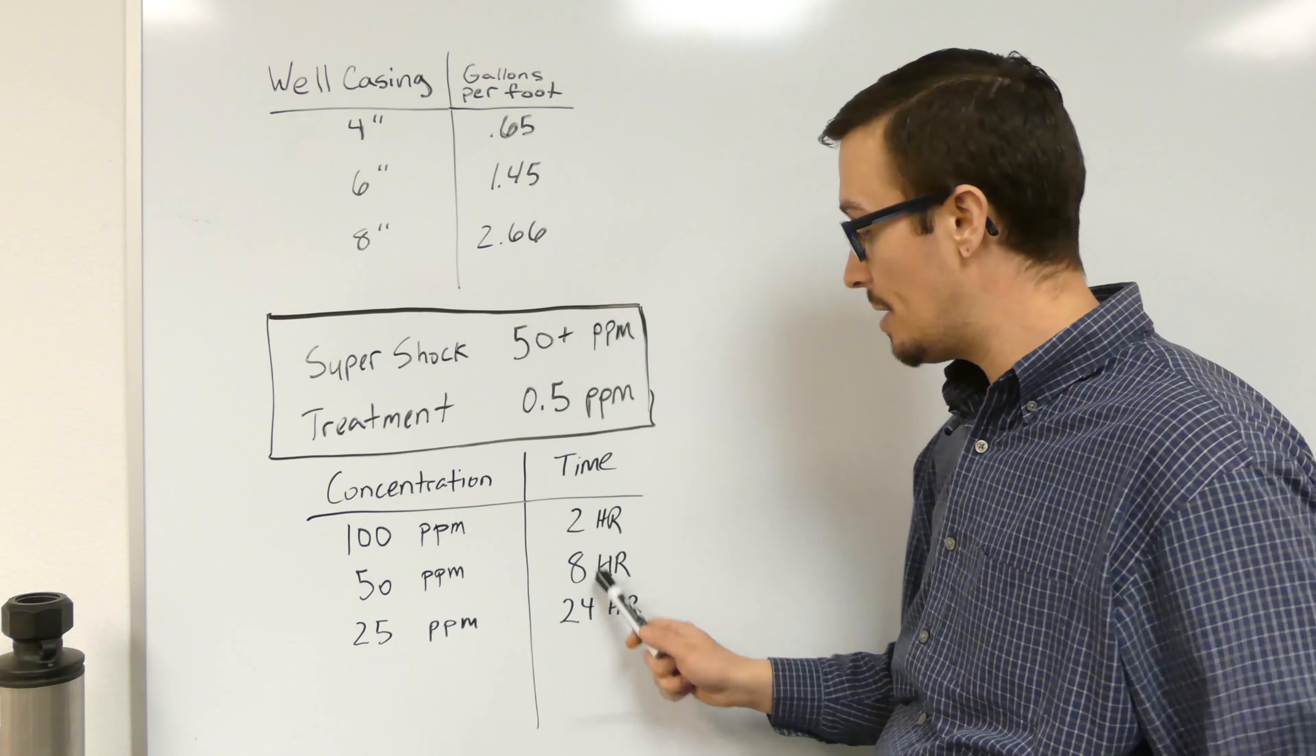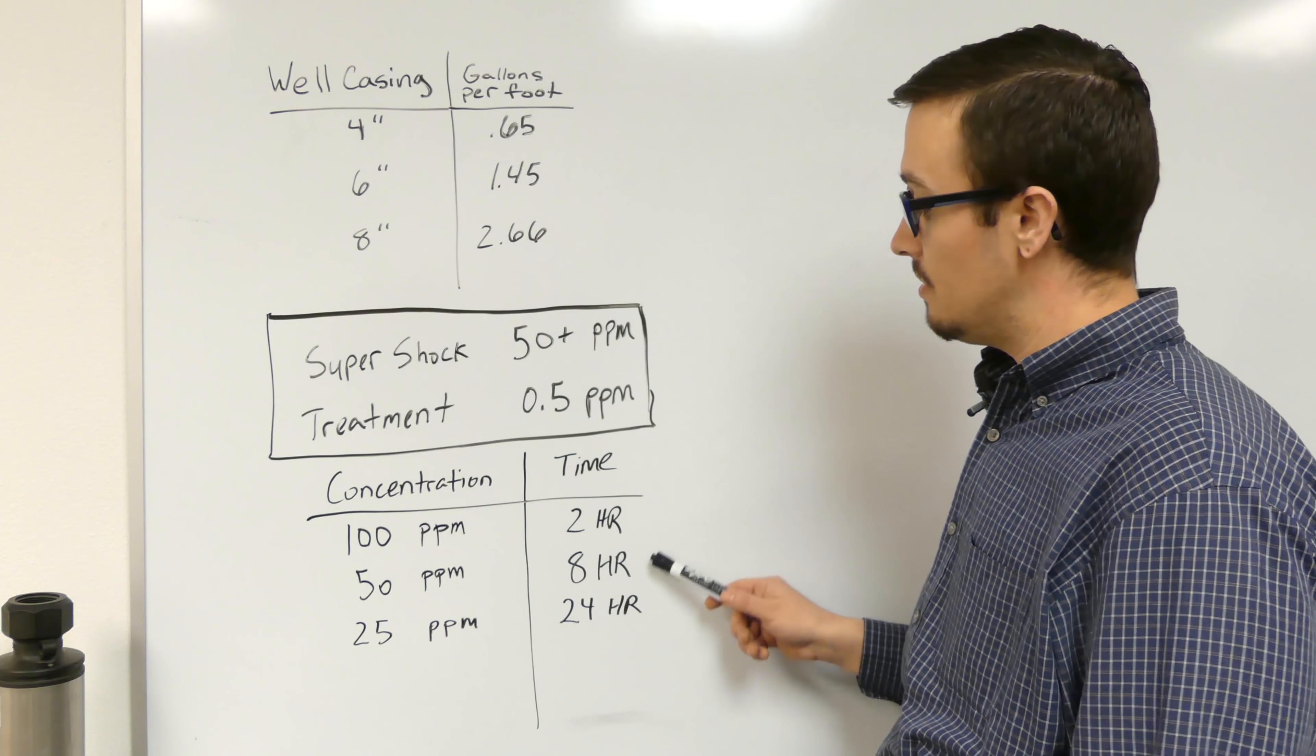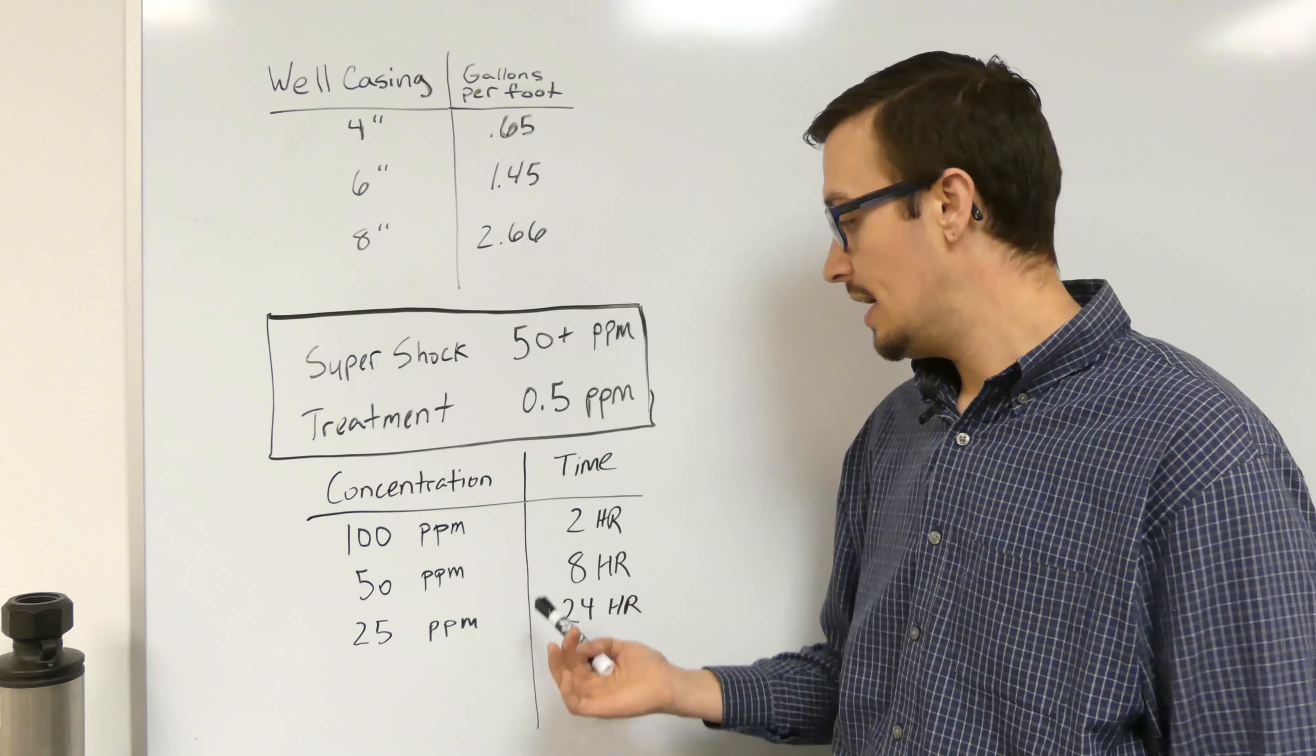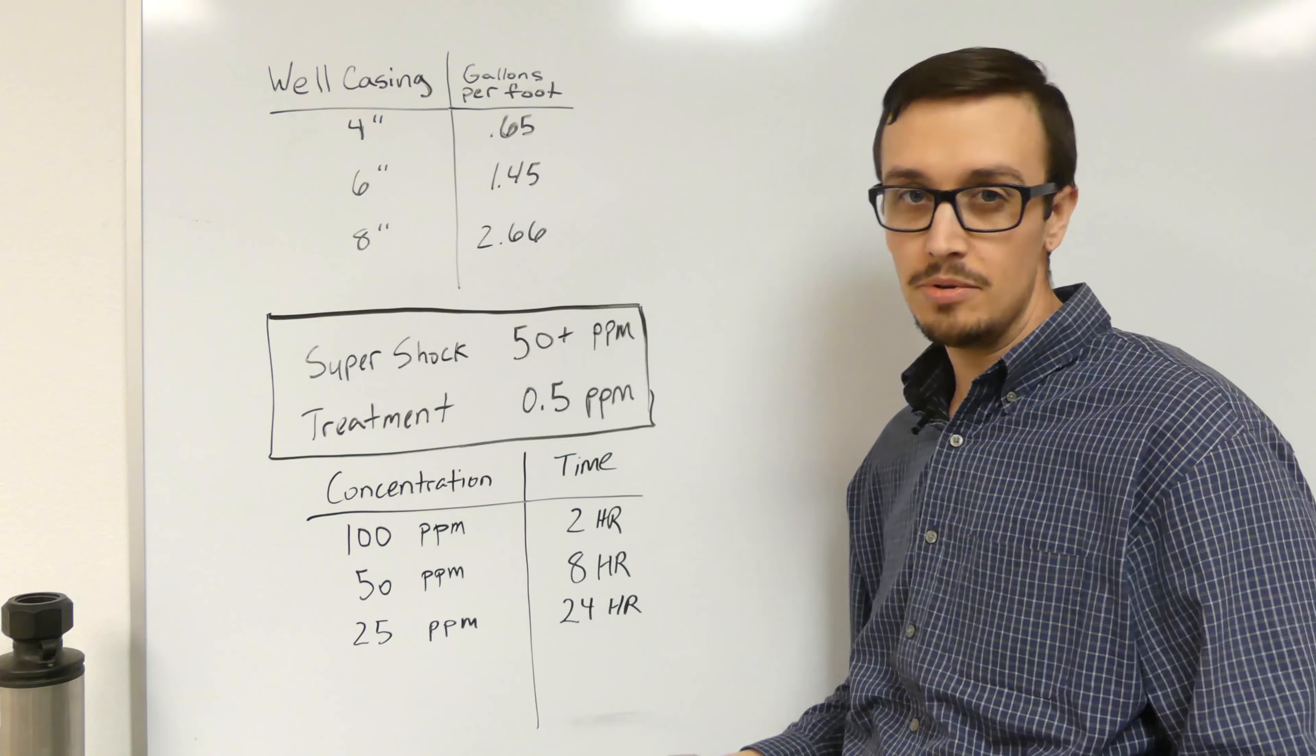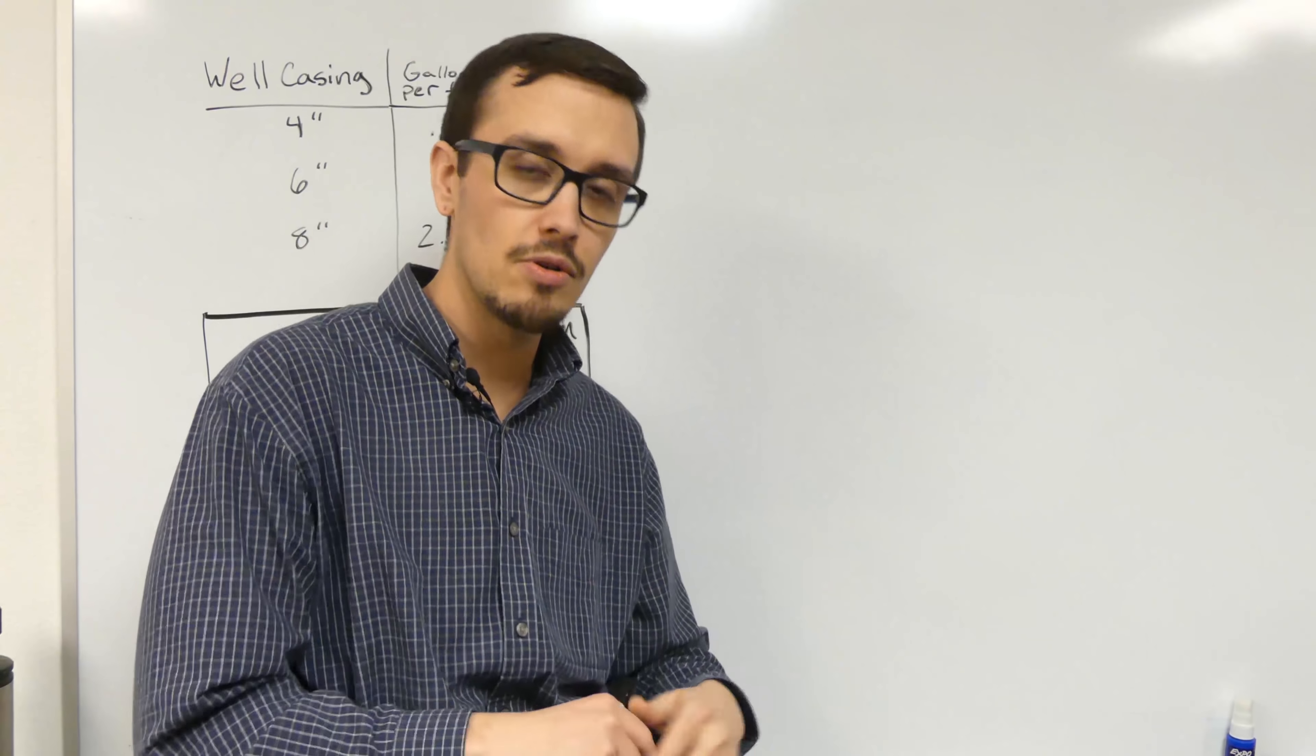The higher the concentration of chlorine, 100 parts per million versus 50 parts per million for example, you're going to have a dramatically shorter retention time. If we actually half the amount of chlorine, the length of time increases fourfold. We go from two to eight hours. You can decide based on your schedule how much time you have, and you might be able to use a little bit less chlorine, get longer retention times, and so forth.